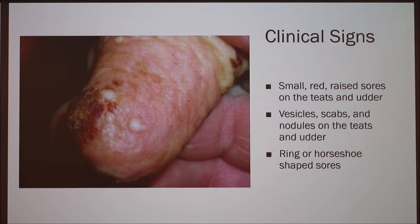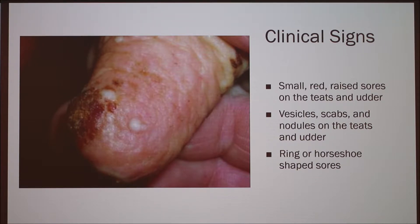The clinical signs of pseudo cowpox are small red raised sores on the teats and udder. These will then turn into vesicles, scabs, and nodules on the teats and udder. The sores are often ring- or horseshoe-shaped. It is important to look at a sample under a microscope to determine if it is pseudo cowpox and not something else, like regular cowpox or even just a cut on the teat. The image here shows the scab, and once the scab comes off it will look like a circle or horseshoe.